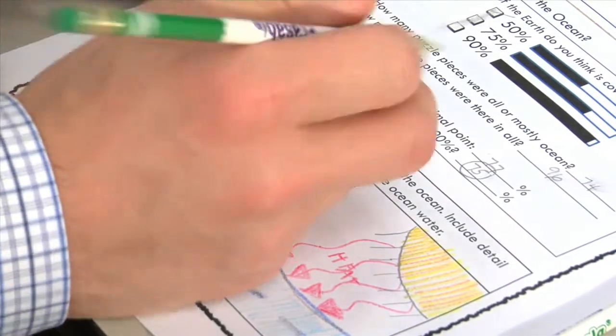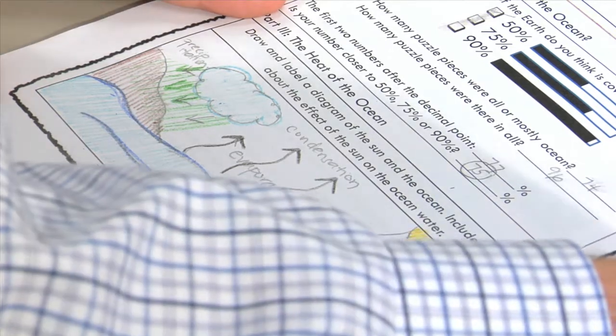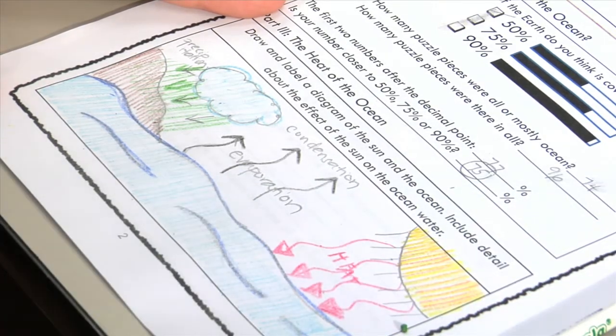As a final exercise, create a water cycle diagram to illustrate the heat of the ocean and label the drawing using colored map pencils.